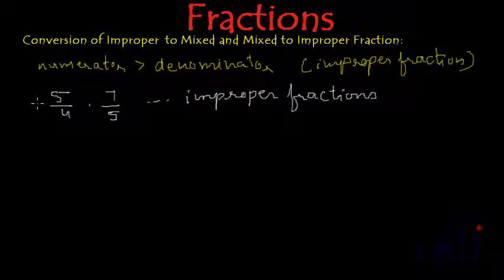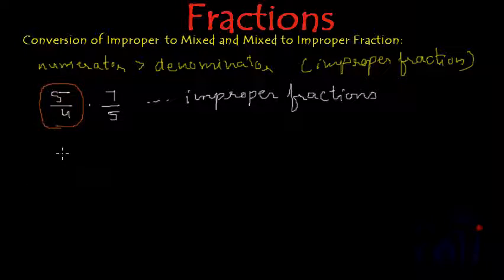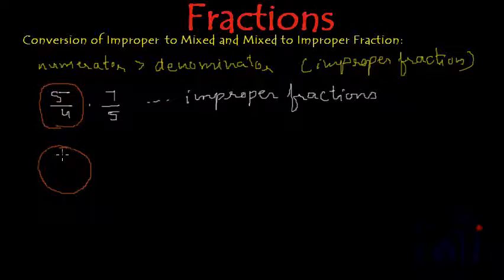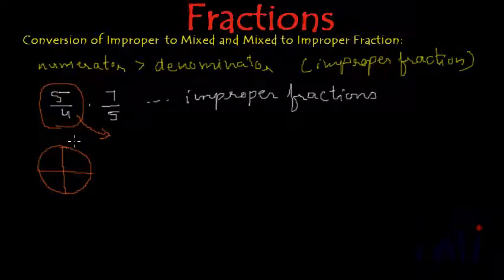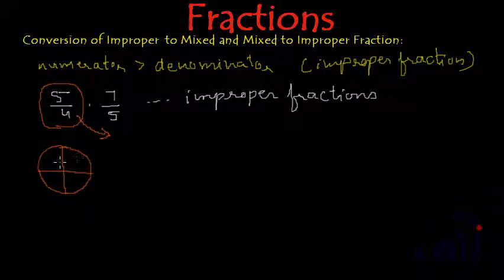If we take the first fraction 5/4 and represent it in pictures using a circle, we need to divide the circle into 4 parts. Why 4 parts? Because the denominator is 4, and the denominator tells us how many equal parts we have to make. So I have divided this circle into 4 equal parts.